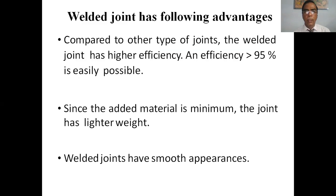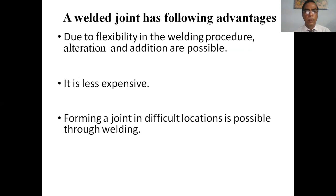Welding joints have the following advantages compared to other types of joints. Welded joints have higher efficiency, and efficiency greater than 95% is easily possible. Since the added material is minimum, the joint has lighter weight. Welded joints are smooth in appearance. Due to flexibility in the welding procedure, alterations and additions are possible. Forming a joint at a difficult location is possible through welding.